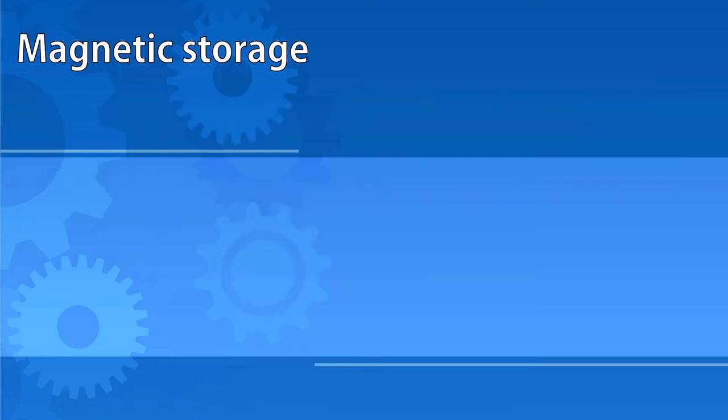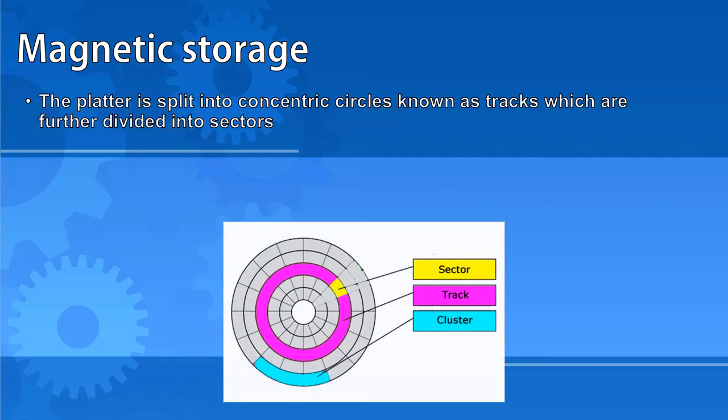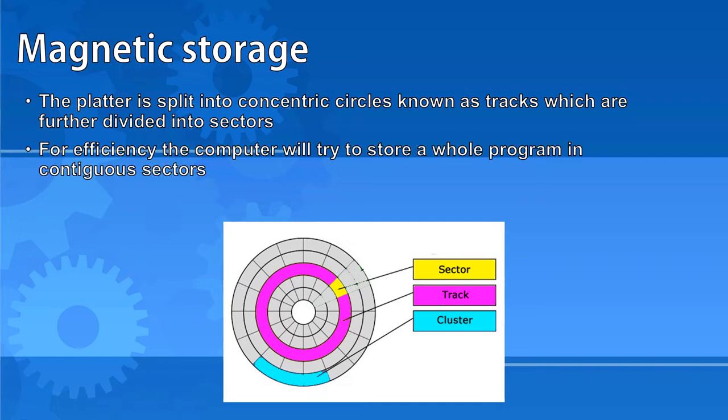Platters in magnetic storage are split into concentric circles known as tracks. These are further divided into sectors. So that the computer doesn't have to spin the disk so far, it tries to locate whole programs in contiguous sectors. A group of sectors is known as a cluster.